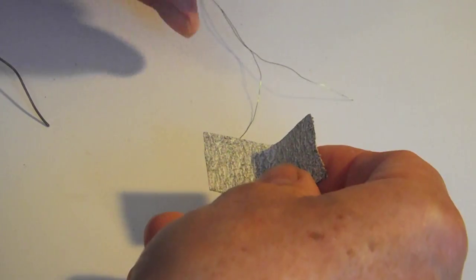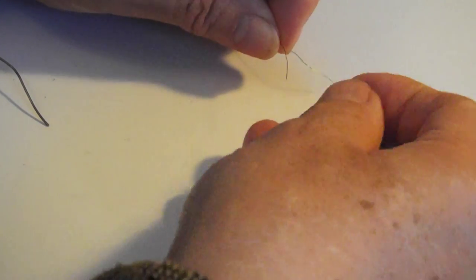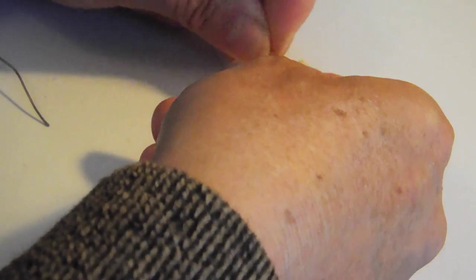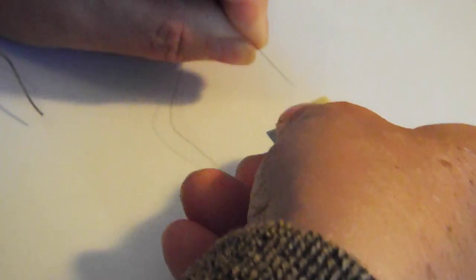Now we take a small piece of sandpaper or glass paper, fold it over and use it to remove the insulating coating from the end of the wire.